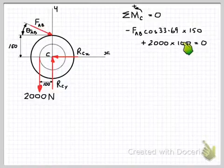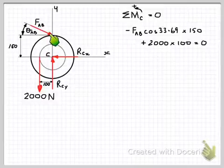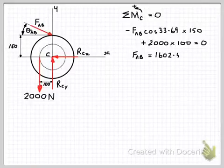So we have one equation, one unknown, which is our force FAB in the pawl over here. So do the sums and we can easily calculate the force equal to 1,602.5 newtons.